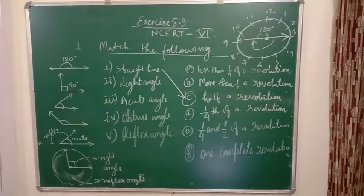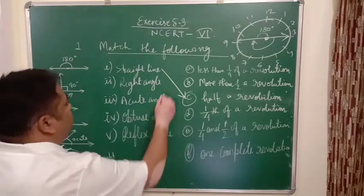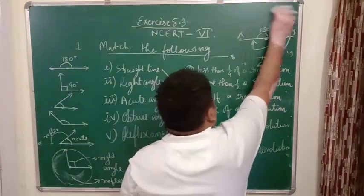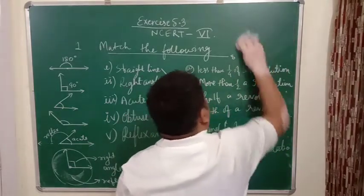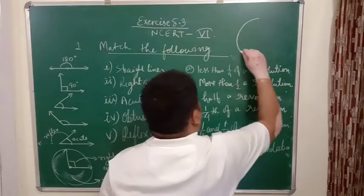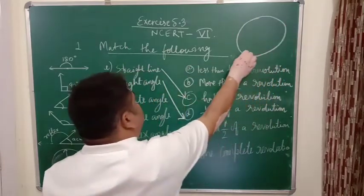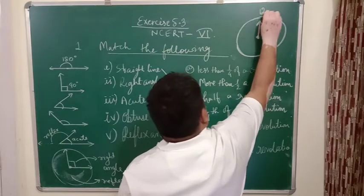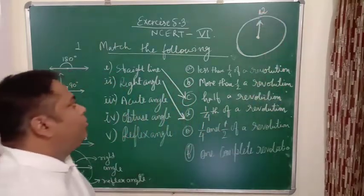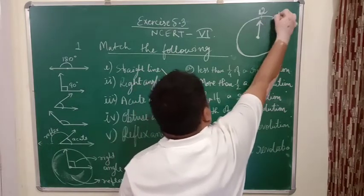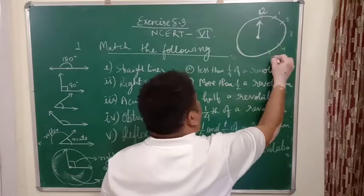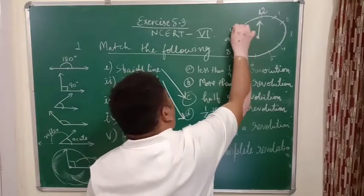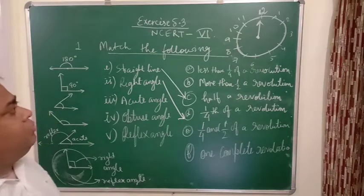Right angle will be one-fourth of a revolution. If you will take one-fourth of any revolution, example, where would we like to keep the hour's hand? Let it be in 12. Let this be at 12. Now after every 5 divisions there is one number given.